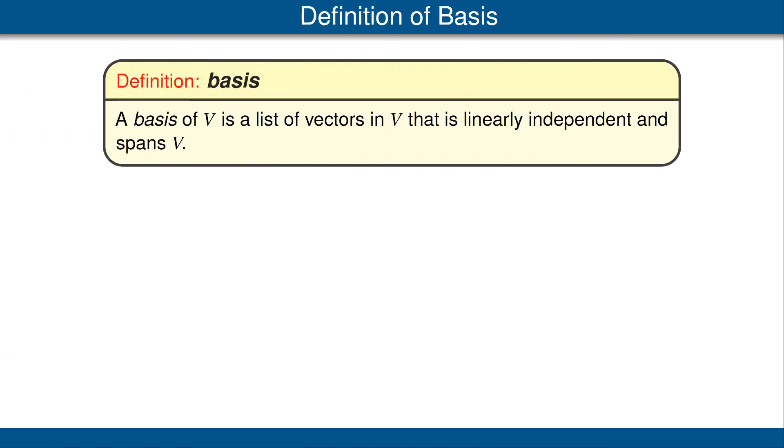Now we come to one of the crucial definitions in linear algebra. A basis of a vector space is a list of vectors in that vector space that is linearly independent and spans the vector space. Thus there are two conditions: the list must be linearly independent and it must span the vector space.